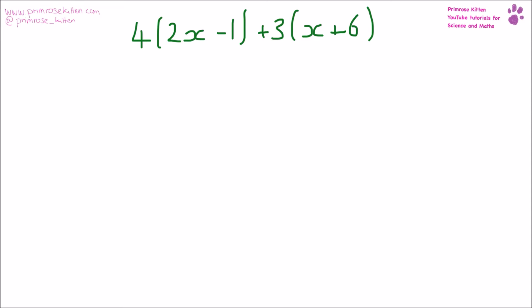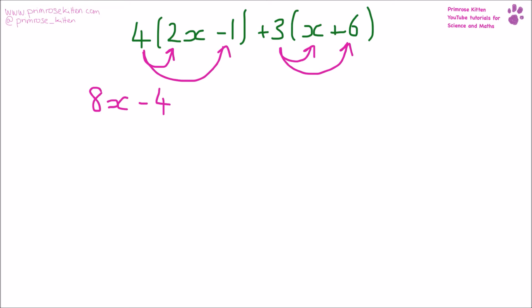So here we need to multiply out this bracket — we take 4 and times it by each term inside. That will give us 4 times 2x, which is 8x, minus 4. Then we take 3 and times it by each term in the next bracket, and that will give us plus 3x plus 18.